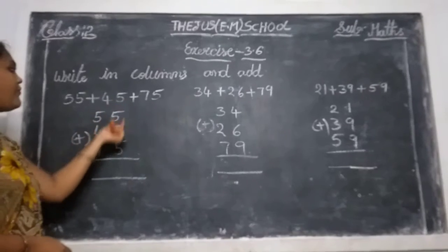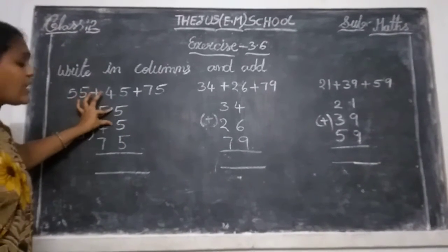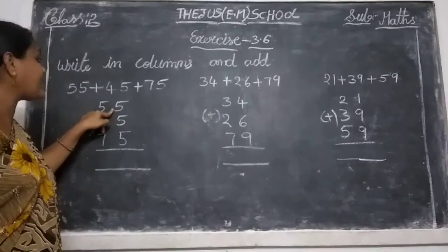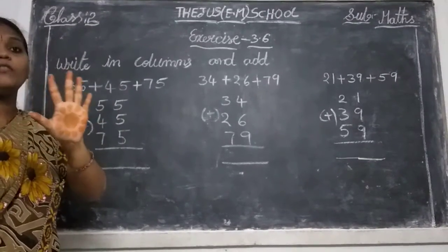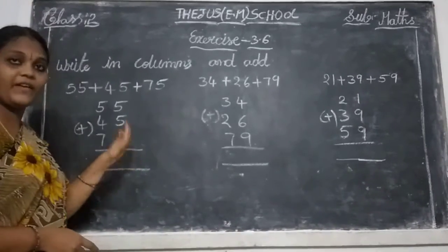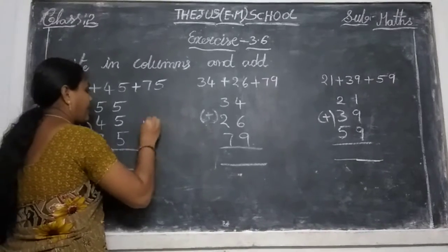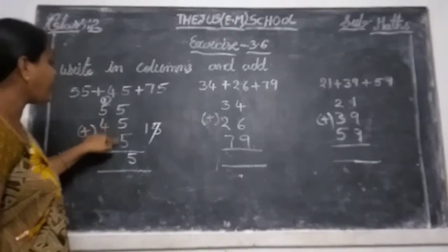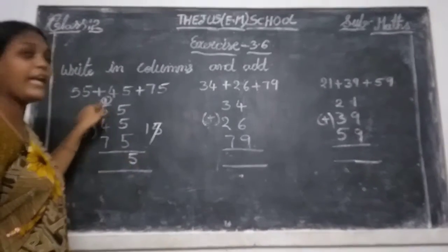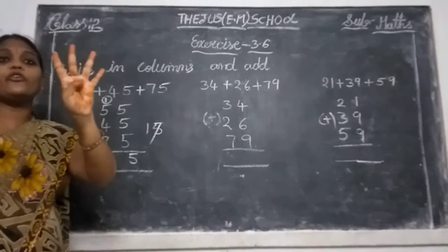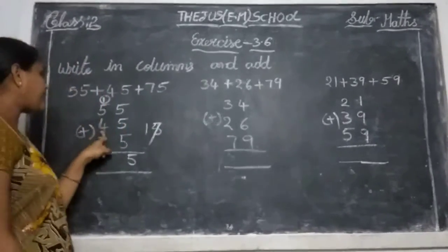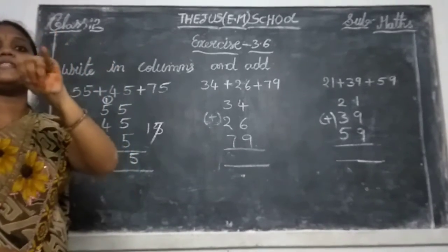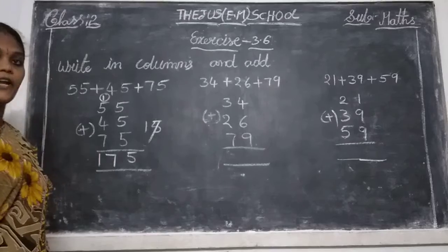See next sum: 55, 45, 75. Write in columns — ones place and tens place. In ones place: keep 5 in your mind, take 5 fingers: count 6, 7, 8, 9, 10. Keep 10, take 5 fingers: count 11, 12, 13, 14, 15. Write 15 — 5 down, carry 1. Then tens: 1 keep in mind, take 5 fingers, get 6; take 4 more: 7, 8, 9, 10; take 7 more: 11 through 17. Answer is 175.